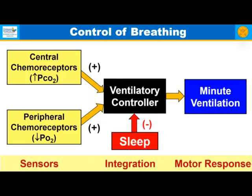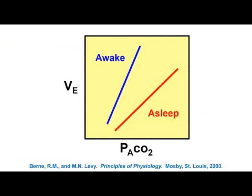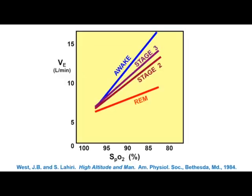Controlled breathing uses central and peripheral chemoreceptors, which stimulate the voluntary controller, with minute ventilation as the motor output. Sleep in general depresses breathing, primarily at this level. The ventilatory response to CO2 — the hypercapnic ventilatory response — is diminished during sleep compared to wakefulness. Similarly, the hypoxic ventilatory response is also depressed during sleep, and more so in REM sleep than in non-REM sleep compared to wakefulness.